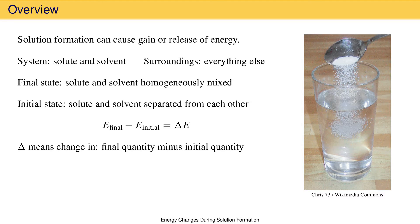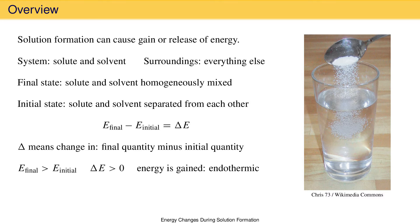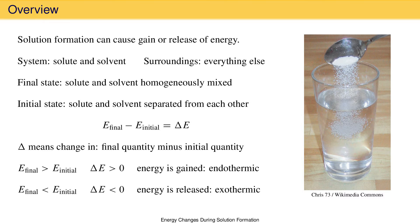If the total energy of the solution — the final energy — is greater than the total energy of the solute and solvent before being mixed — the initial energy — then the change in energy of the system will be positive, greater than zero, meaning there has been a net gain of energy by the system. This is called endothermic. If the total energy of the solution is lower than the initial energy, then delta E is negative, meaning there has been a net release of energy. This is called exothermic.